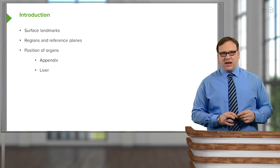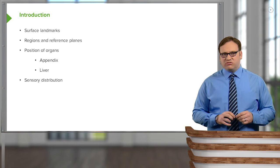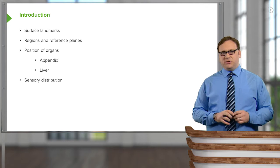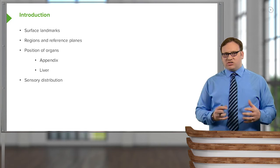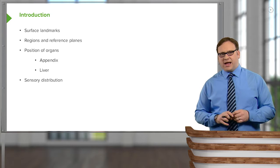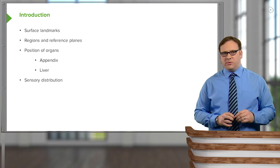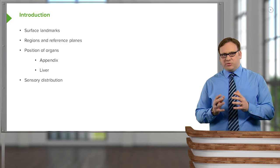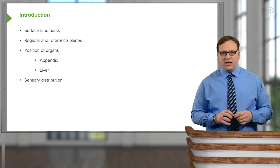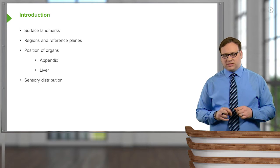And then finally, towards the end of the lecture, we're going to importantly look at the sensory distribution — how the skin of the abdomen receives its sensory innervation and how this passes back to the spinal cord. This is important when we're looking at the distribution of pain from pathologies within the abdomen and the viscera of the abdominal organs.